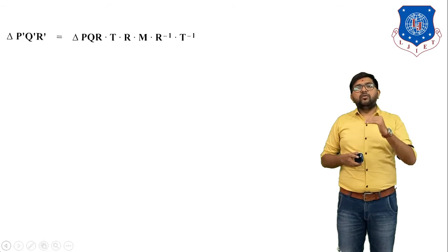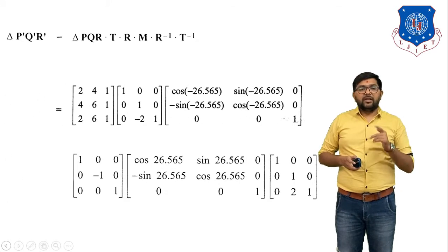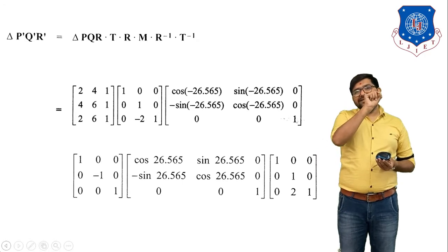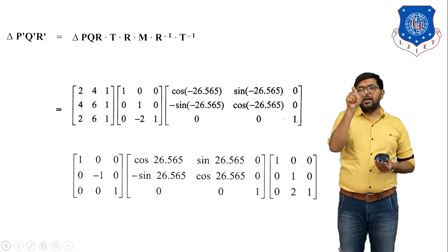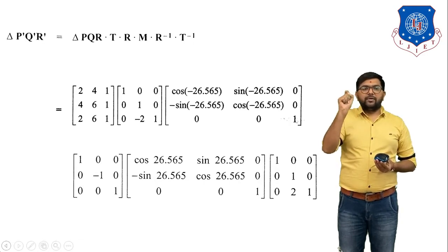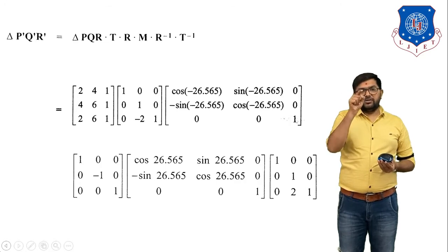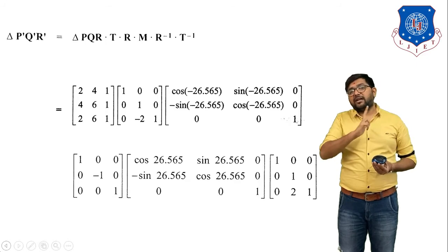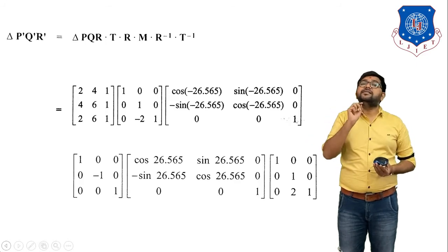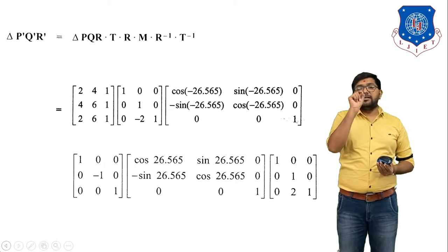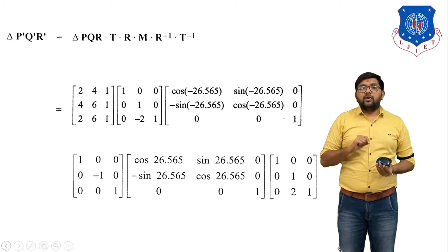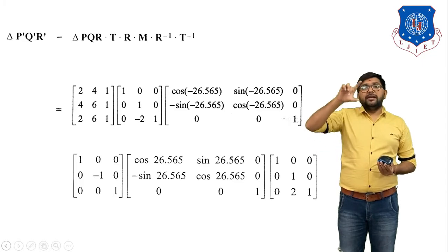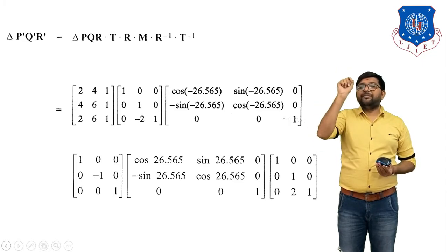Now we put values into the equations. In this numerical we have a total of 6 matrices. First, write down the coordinates of triangle PQR: [2 4 1 / 4 6 1 / 2 6 1]. Next, translation: we give no translation in the x-axis so Tx = 0. Since c = 2, the line intersects the y-axis at y = 2, so we must move the line downward by 2 units, giving Ty = −2. The translation matrix uses Tx = 0, Ty = −2.